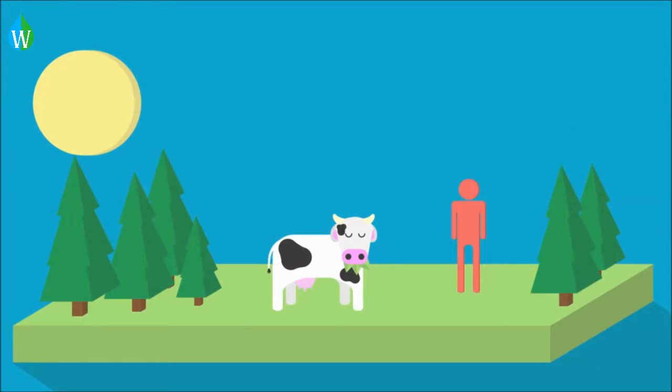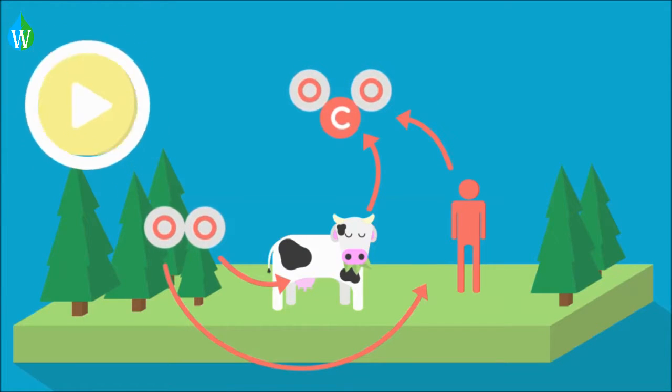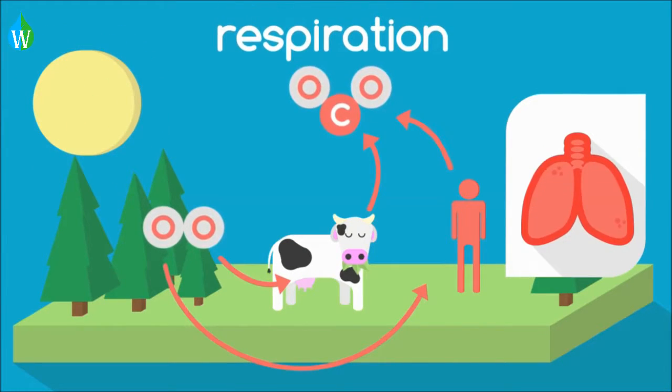To obtain energy for all these living processes, plants and animals take in oxygen and rejoin it with the carbohydrates, so returning the carbon dioxide to the atmosphere. Do you remember what this process is called? Pause the video. This process is called respiration.